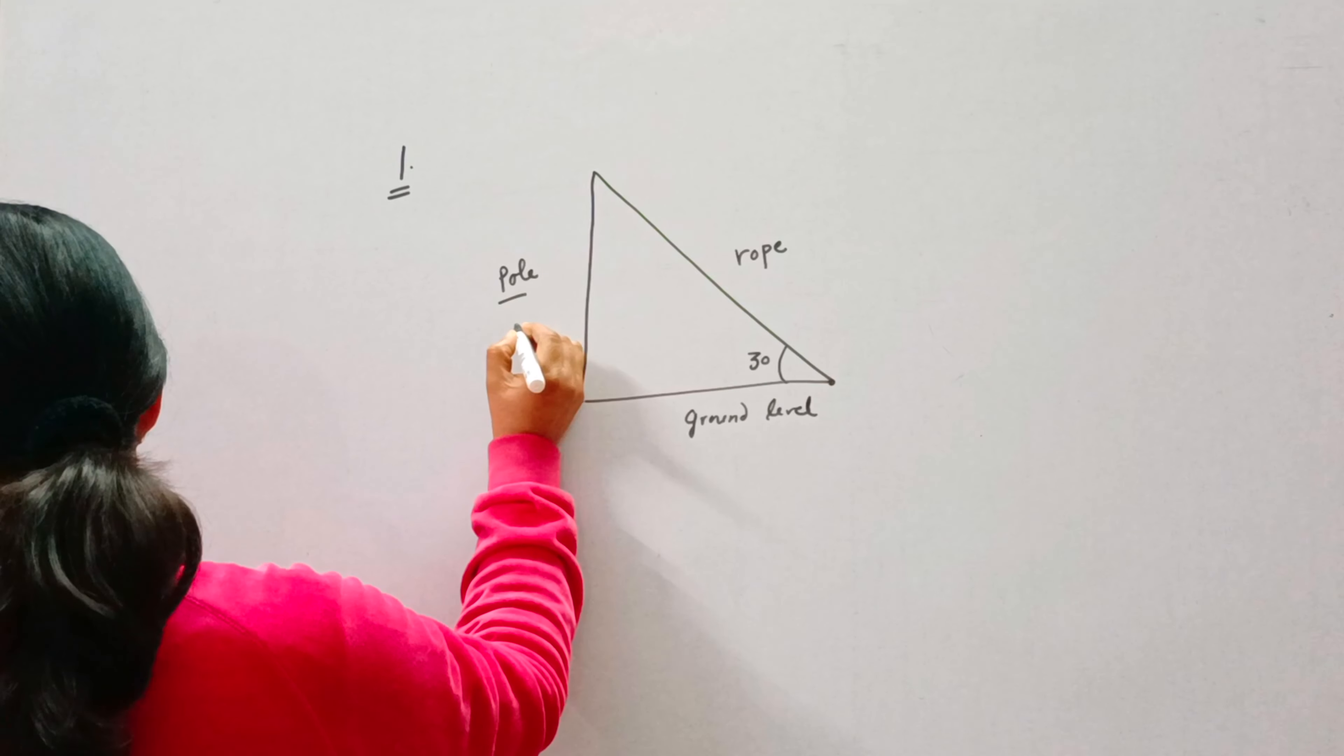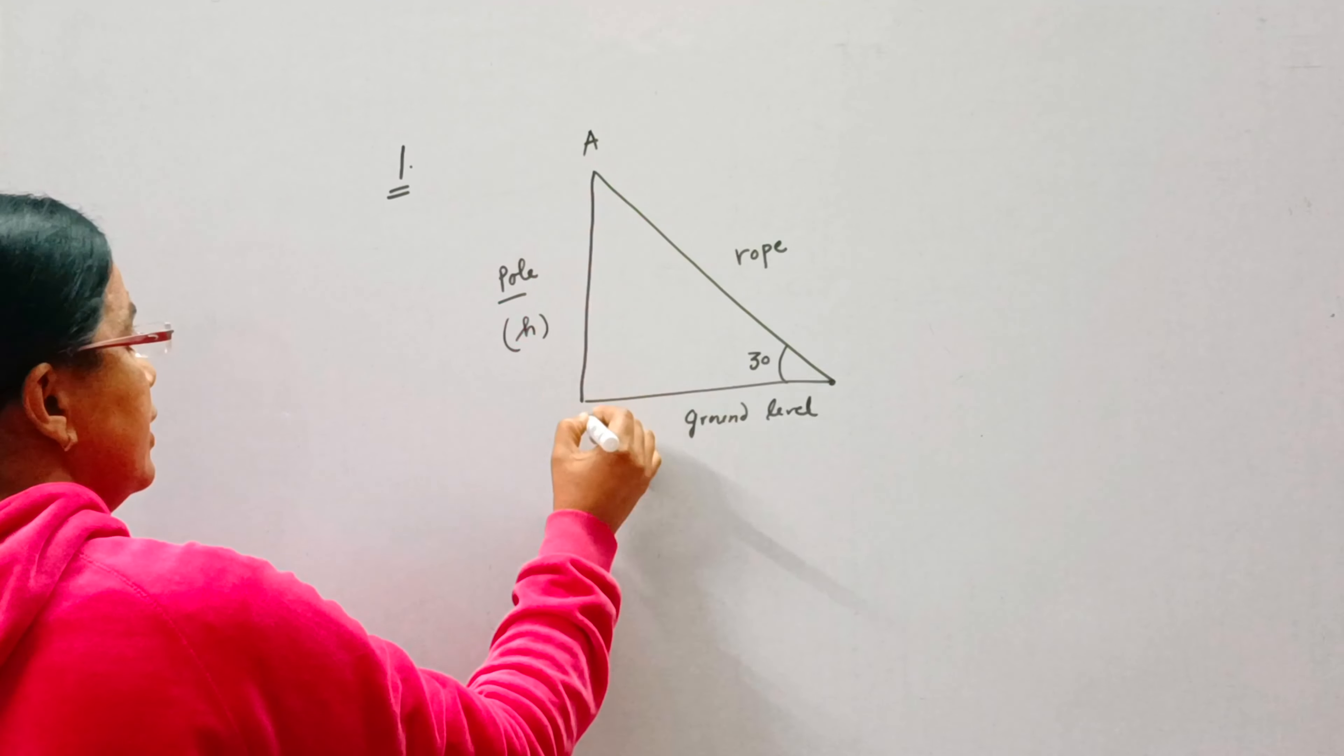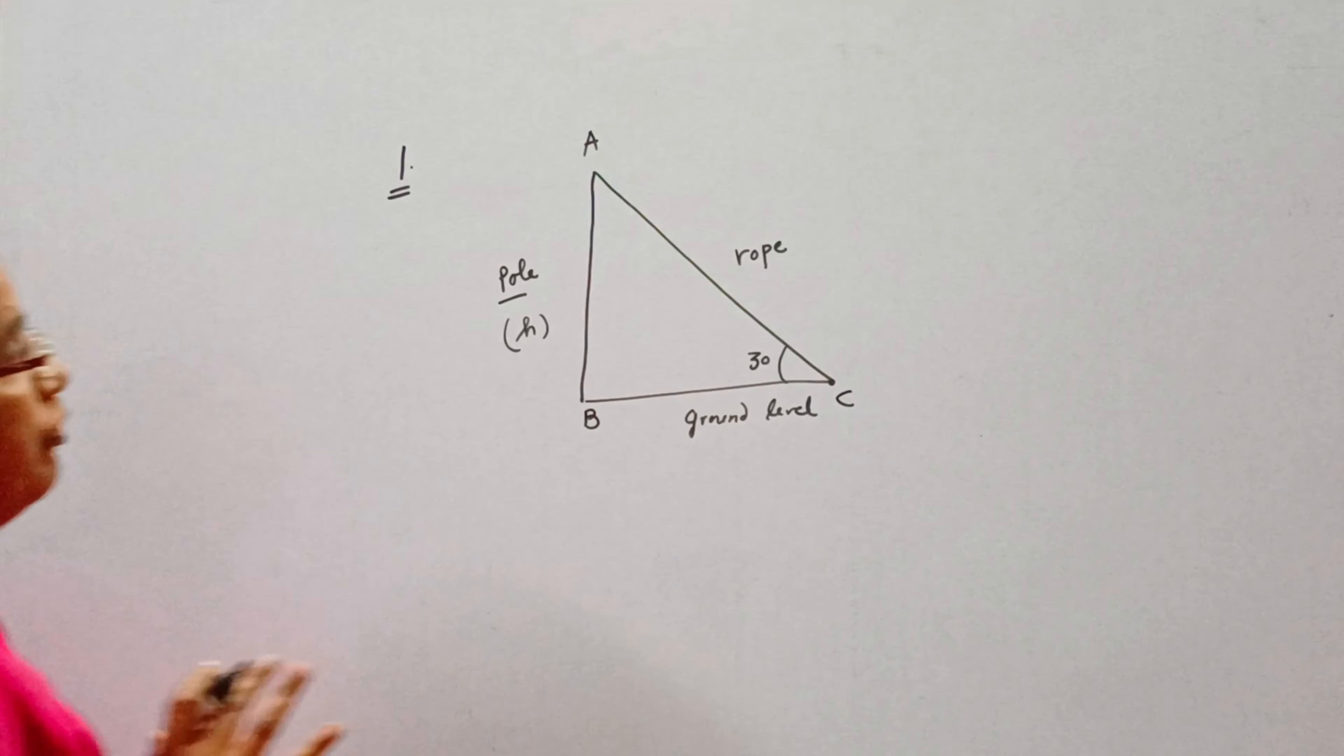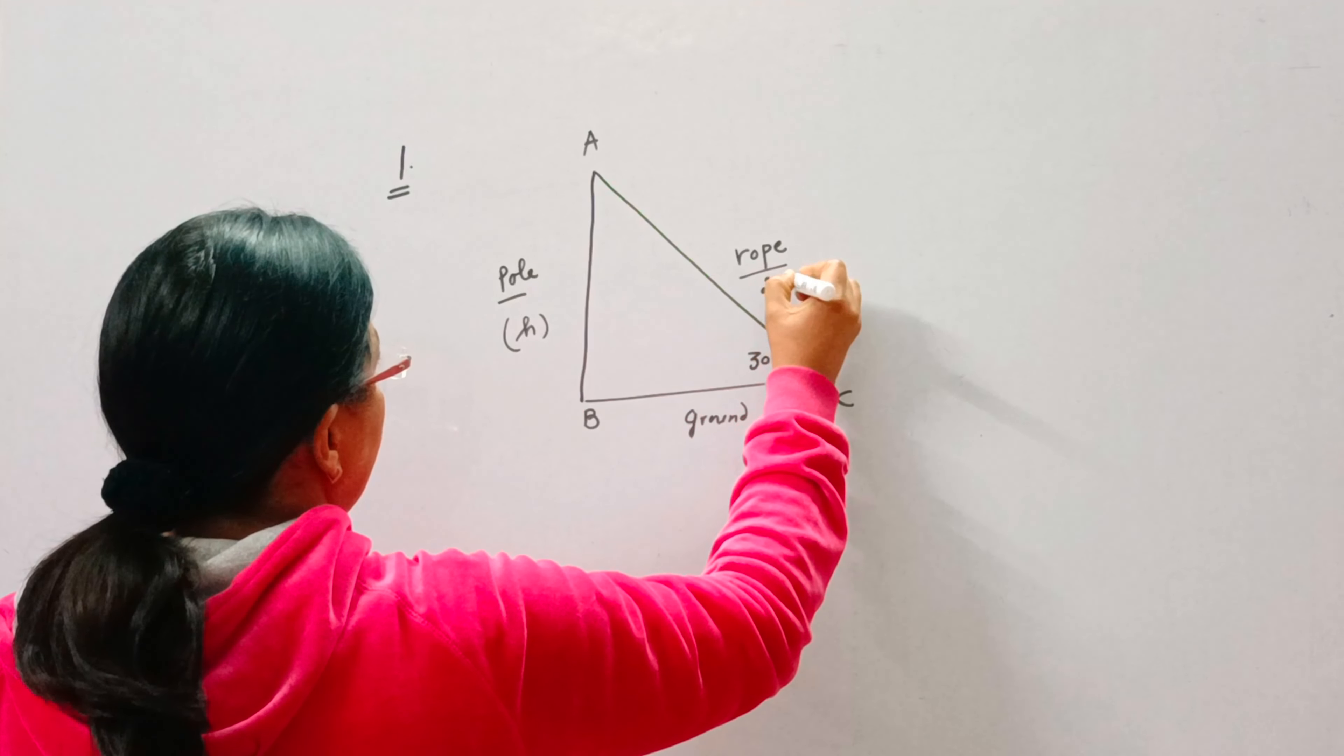Now we need to find the height of the pole. Suppose the triangle is ABC. So this is the figure, and the length of the rope is 20 meters.